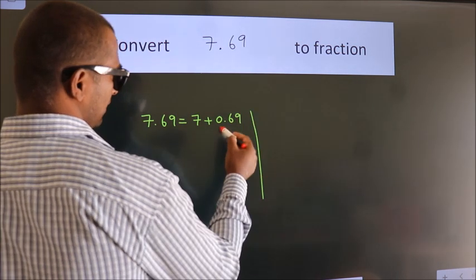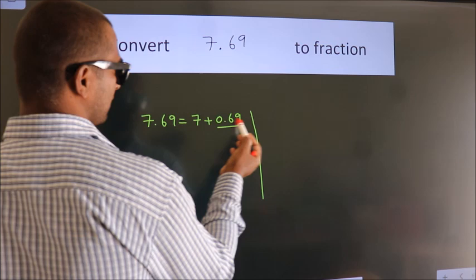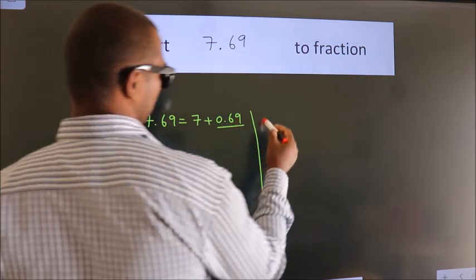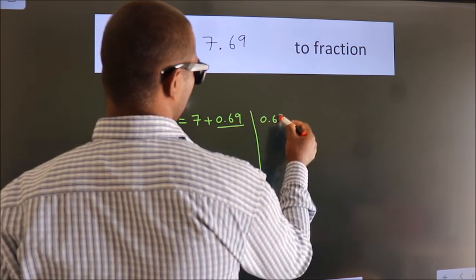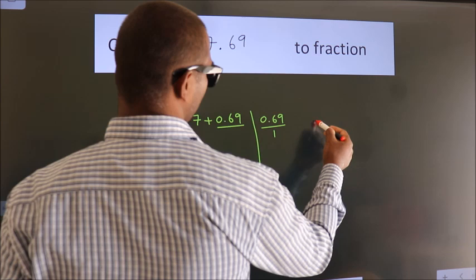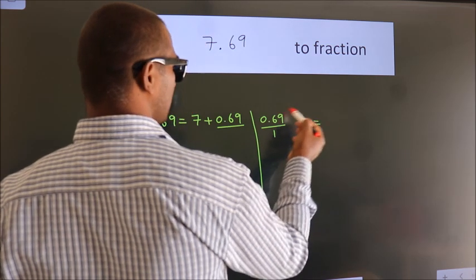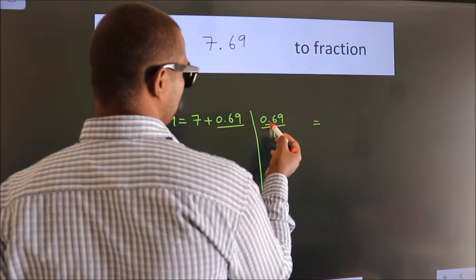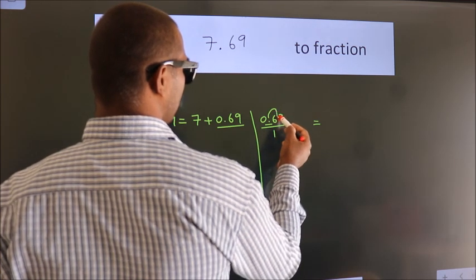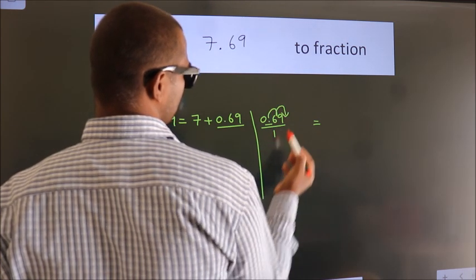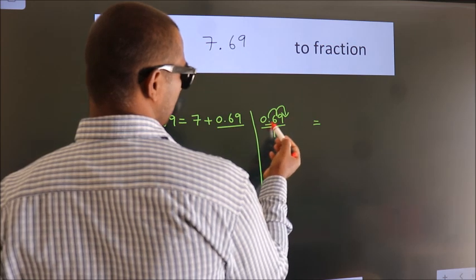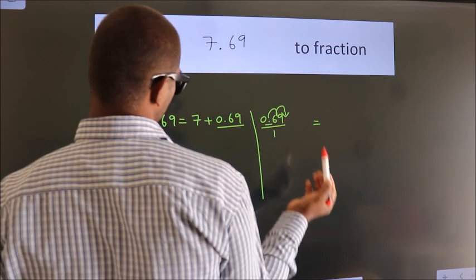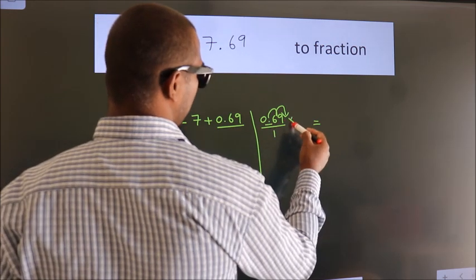Next convert this to fraction. So 0.69, to convert this to fraction we have to move this decimal after 1, 2 numbers. To move this decimal after 2 numbers, multiply it with 100.